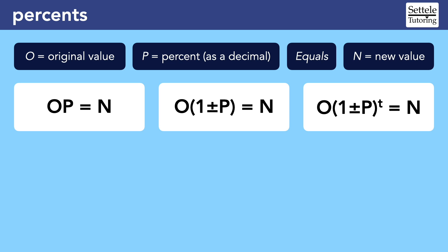There are actually three OP formulas that you can use in the SAT. The main OP formula just looks like the word open, which is where I got the name. We use this formula when we want to take a simple percentage of some value. In all of the formulas, O stands for the original value, P is the percentage as a decimal, E reminds us where to put the equal sign, and N stands for the new value after we've taken the percentage.